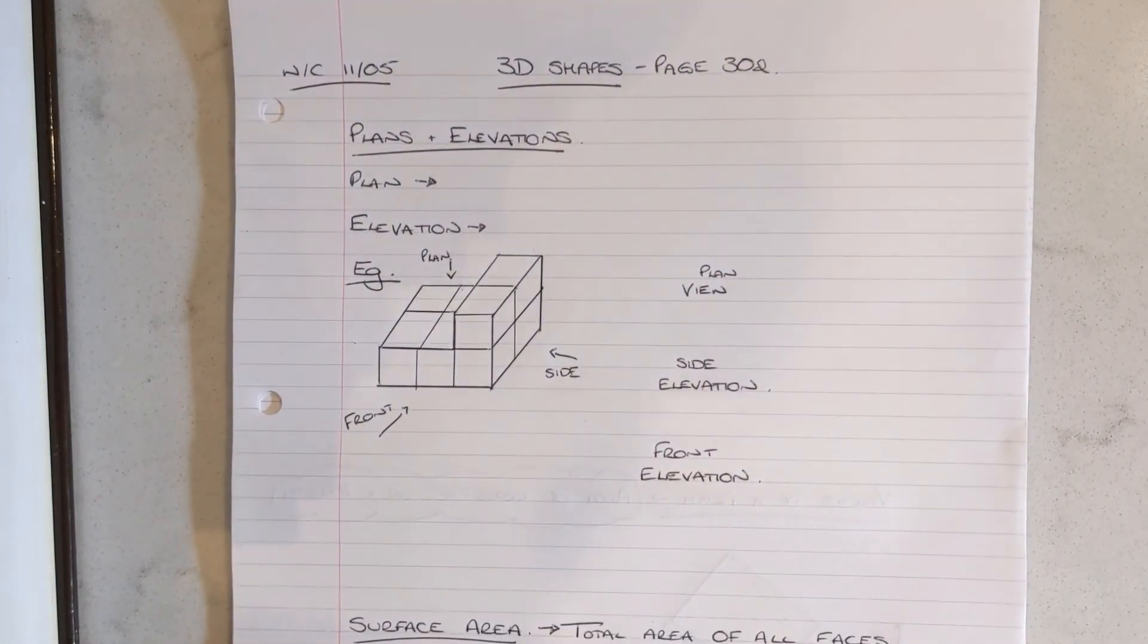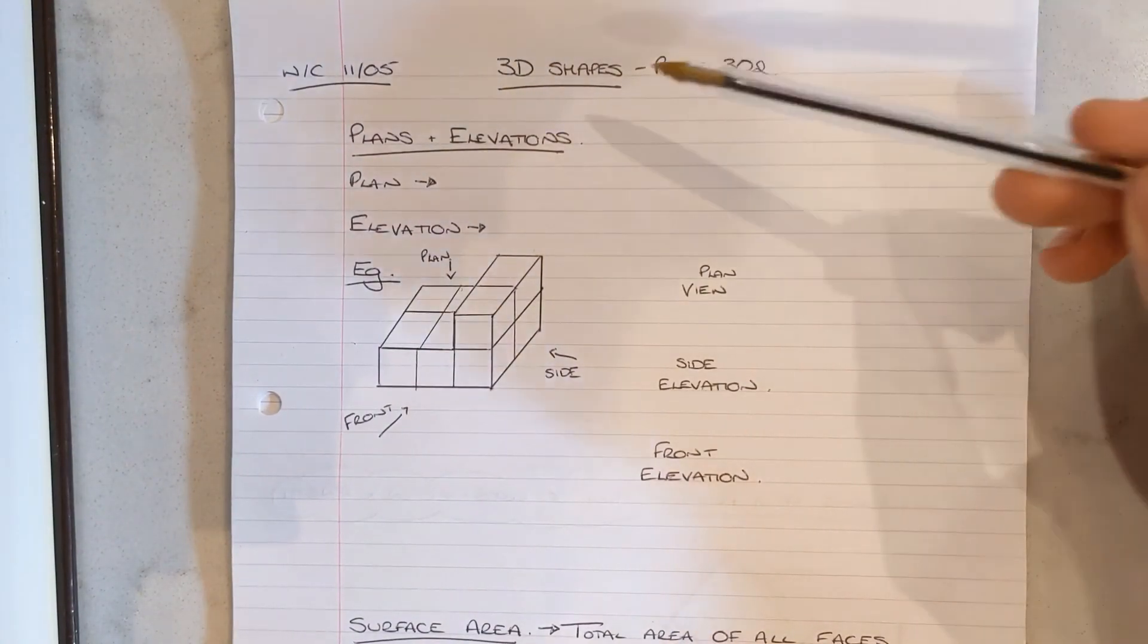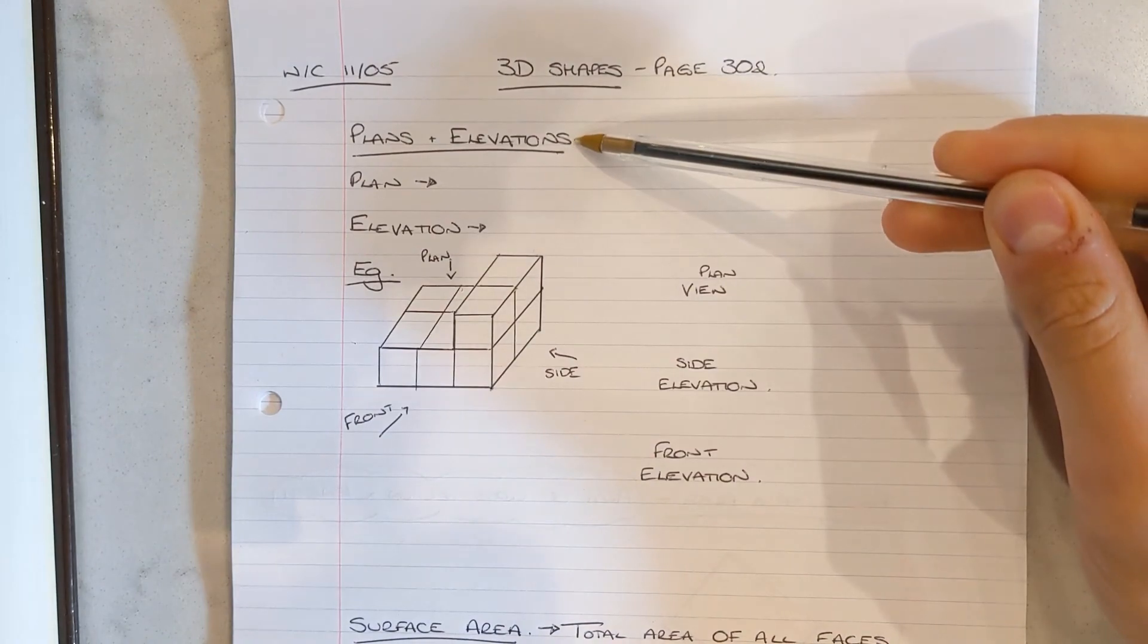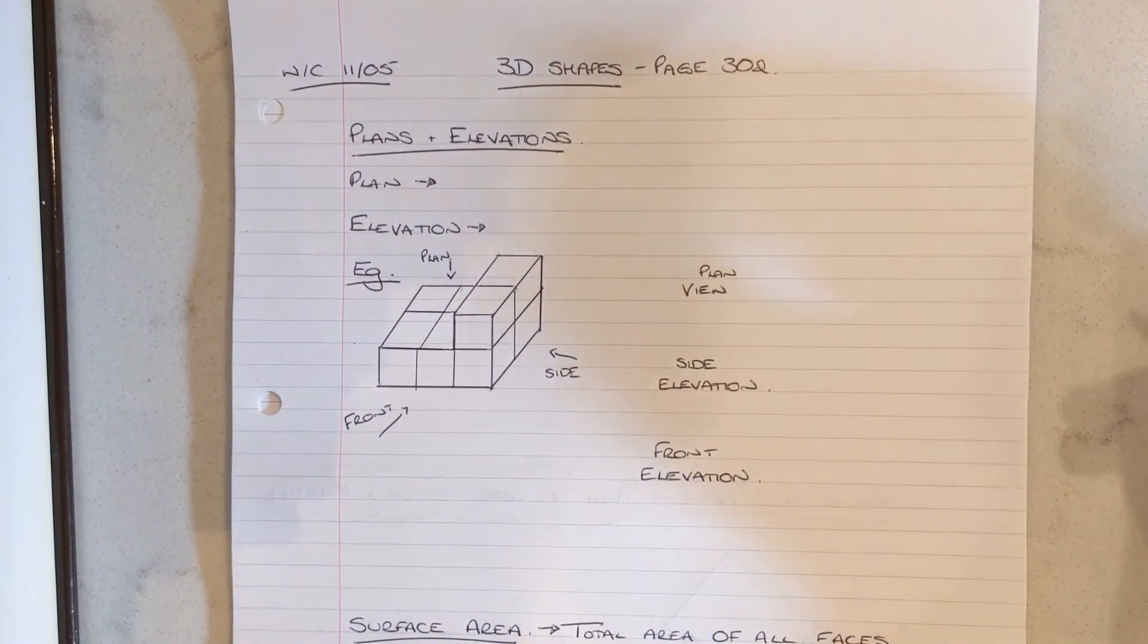Hello Year 10. Today in this video I'm going to be looking at page 302, which is on 3D shapes. It's going to consist of plans and elevations, surface area, and volumes of prisms.